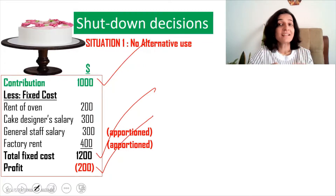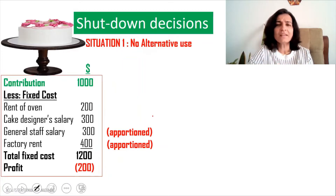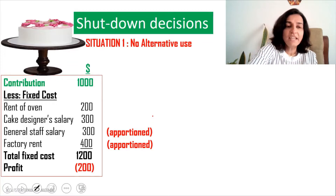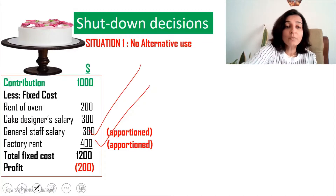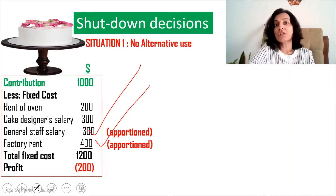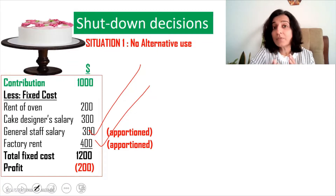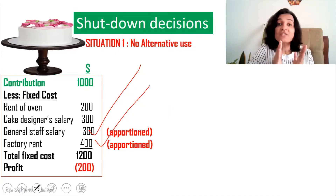Now we have to decide whether to shut down the cake division. Even if you close down the cake division, you will still have to pay the factory rent and the general staff salary — those expenses remain unchanged. So we need to redraft the P&L account to see what profit is attributable only to the cake division.